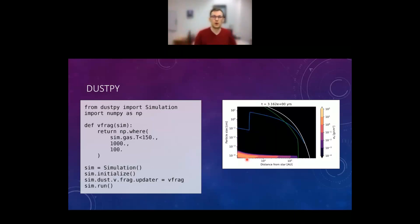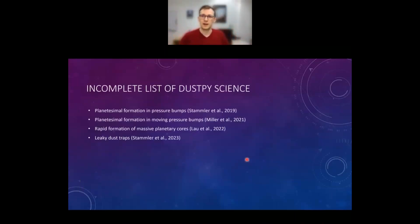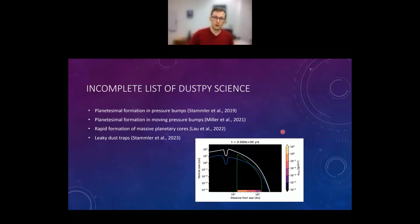I quickly want to show a brief overview of science that we have done so far with DustPy. In one project, we simulated planetesimal formation in a pressure bump. And planetesimal formation just means we added a recipe that when a certain condition is fulfilled, we remove dust and put them in planetesimals. And with that, we could, for example, explain the peculiar optical thickness in the rings that are observed in disks. In another project, we used it in moving pressure bumps. So we could have wide planetesimal rings, which could be interesting for exo-Kuiper belts, for example. In a very recent paper, Timmy was combining DustPy with an n-body code. So the planetesimals that we formed were directly used in an n-body code and we could form planetary cores really quickly.